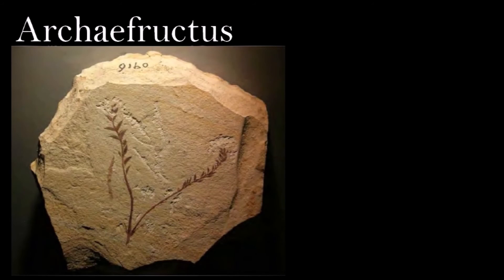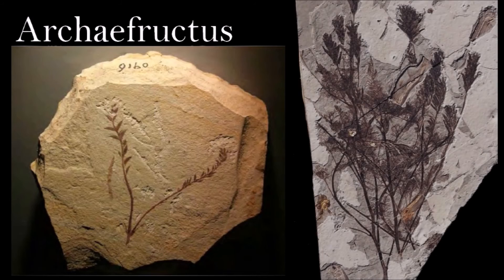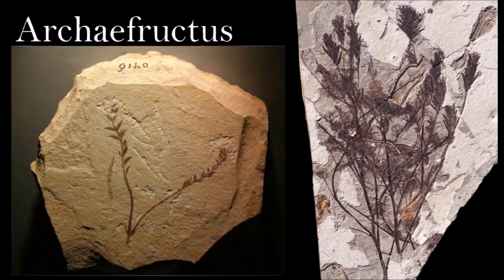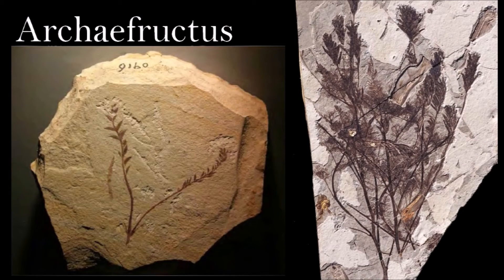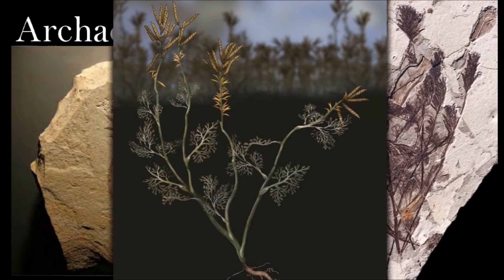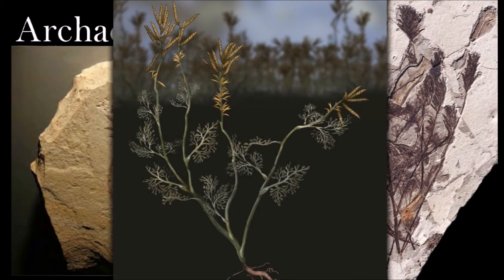Archaefructus is a herbaceous aquatic angiosperm. It does not have petals or sepals, but it does have carpels and stamens. These are attached to an elongated stem with the staminate flowers below and pistillate flowers above. This ancient flower is similar in some respects to Trithuria, a peculiar living genus of Nymphaeales.